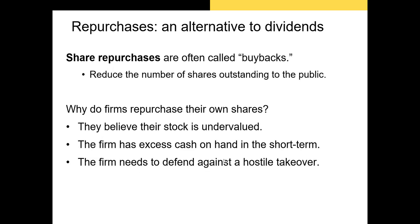Now let's talk about the alternative to dividends: repurchases. Stock repurchases, also known as share buybacks, occur when a firm buys back its own shares on the open market or from specific investors. When a firm repurchases its own shares, it reduces the number of shares outstanding and increases future earnings per share for remaining shareholders — you're splitting the pie across fewer slices. The firm can choose what to do with the repurchased shares, but why do firms repurchase them? There are many reasons.